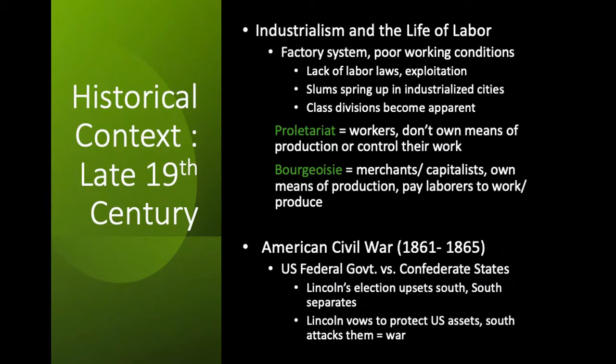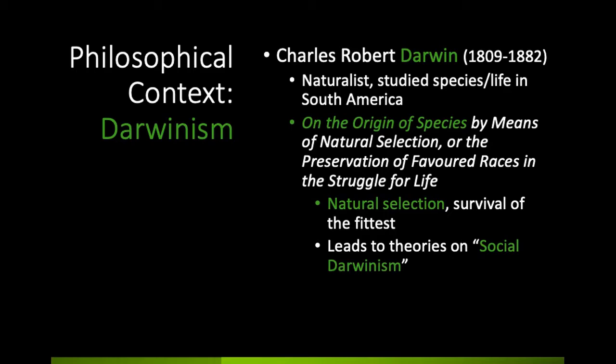In addition to these historical developments, there were some intellectual developments that shaped the era too. First, there were the scientific findings of Charles Robert Darwin. Darwin was a naturalist, and he spent a great deal of time studying species and life in South America as he traveled aboard the HMS Beagle. As he traveled, he recorded what he saw in the Brazilian rainforest and Galápagos Islands — territories with rare and often isolated species of wildlife. He noticed some species he'd never seen before and made special note of how some seemed especially suited to their environments.